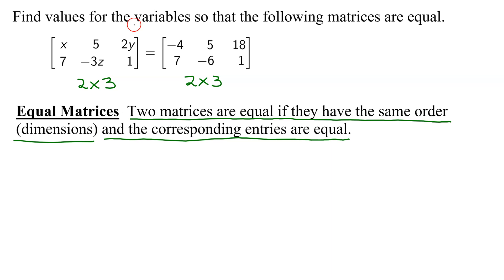So now we're ready to find the variables. Our first variable is x. It is in row 1, column 1, so x has to equal the element that is in row 1, column 1 on the matrix on the right, so we know that x equals negative 4. So we found our first variable.